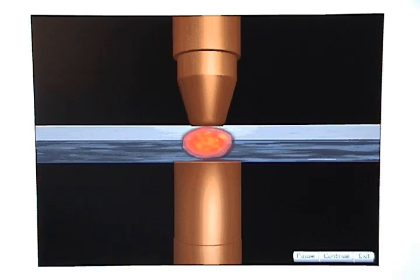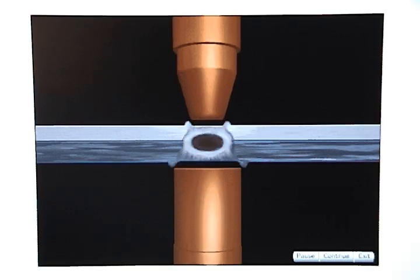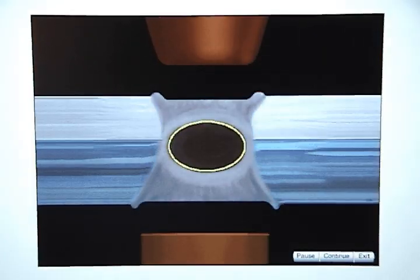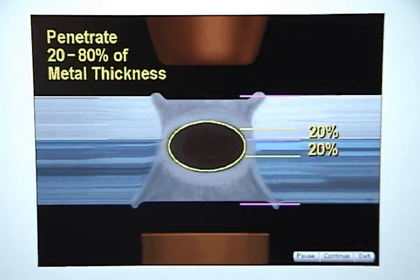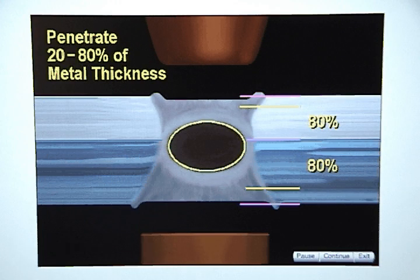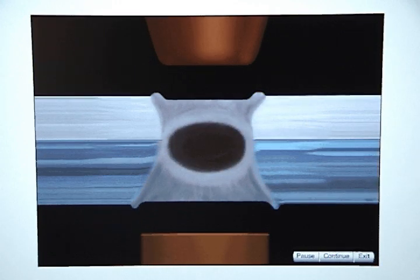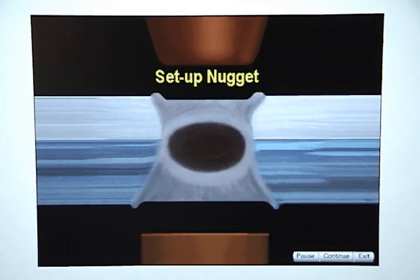A weld nugget should be as wide as the weld tip that contacts the thin metal and penetrate to between 20% and 80% of the metal thickness. This is referred to as a setup nugget.